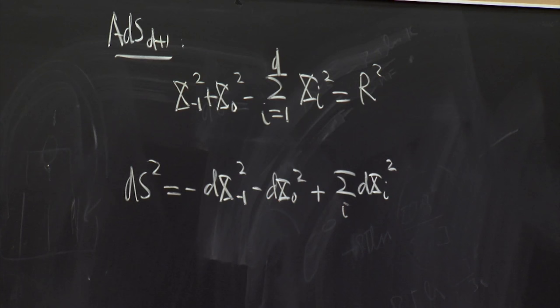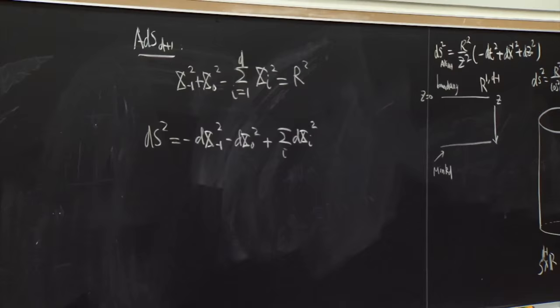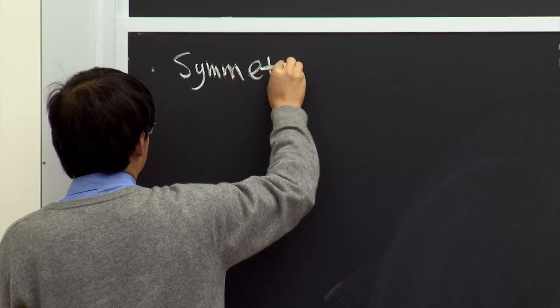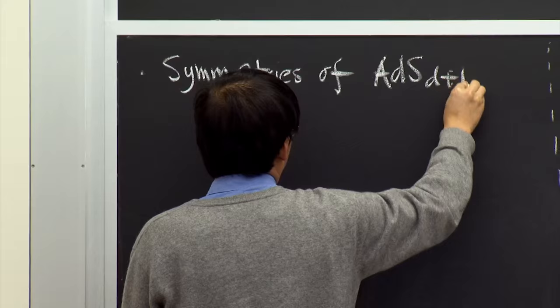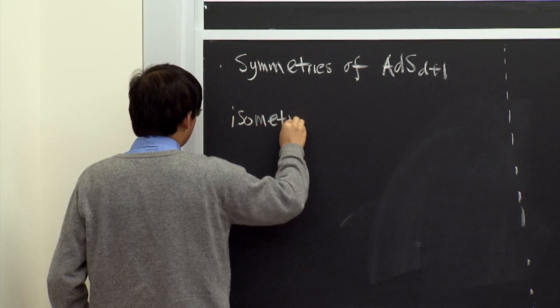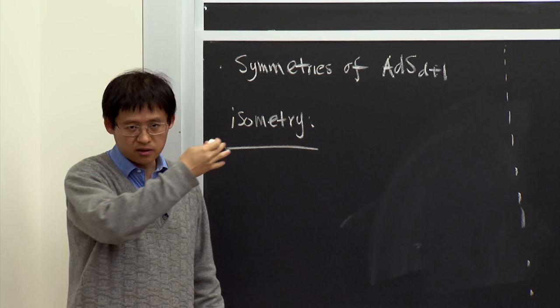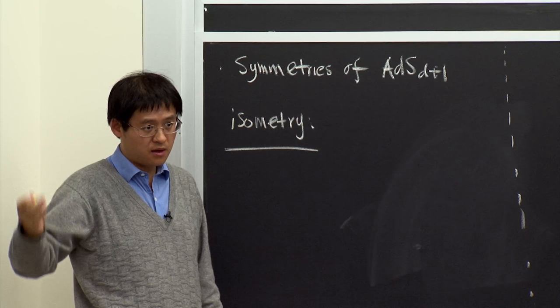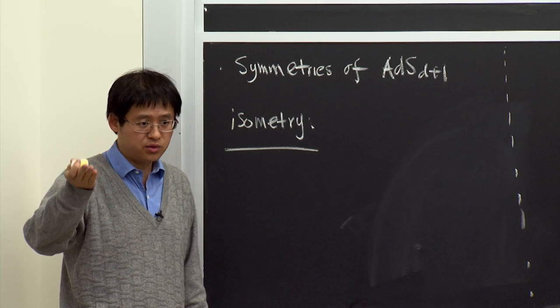Now let's talk about the symmetries of (d+1)-dimensional AdS. Isometry refers to the class of coordinate transformations which leave the metric invariant. For Minkowski spacetime, the isometries are Lorentz transformations plus translations.